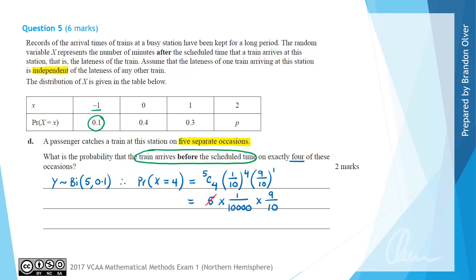And now cancelling this 5 with part of this 10 allows us to calculate our final value, which will be on the top line 9 divided by 2 times 10,000 is 20,000. So that is the answer to part D of this question.